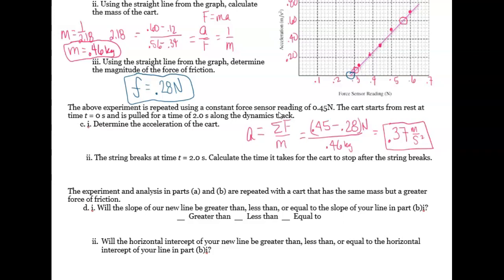Now the string breaks at time t equals two seconds. Calculate the time it takes for the cart to stop after the string breaks. So what that means is that my net force is just equal to friction. So I like to think of it with the same equation and say acceleration is equal to net force over mass. And we're going to say zero minus our friction, which is 0.28 divided by our mass, which is 0.46.